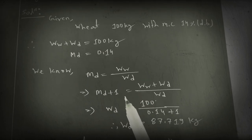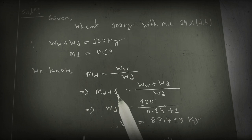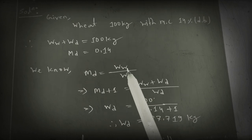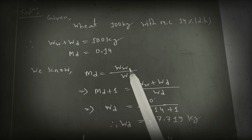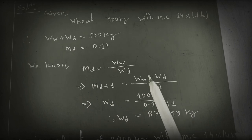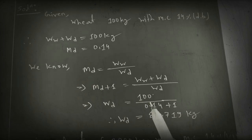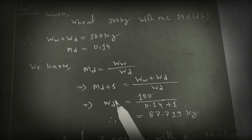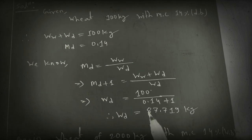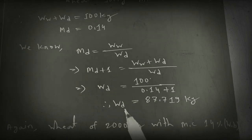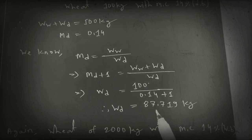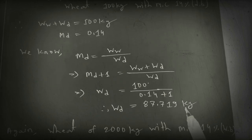To solve this, we add 1 to both sides so we can get the value of WW plus WD. Since WW plus WD equals 100 and MD equals 0.14, we can easily calculate WD. The solid matter from 100 kg of wheat is 87.719 kg.